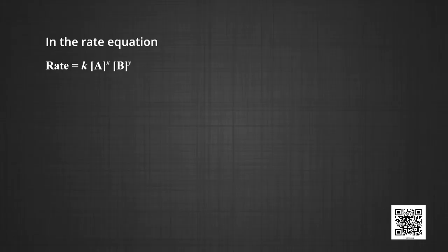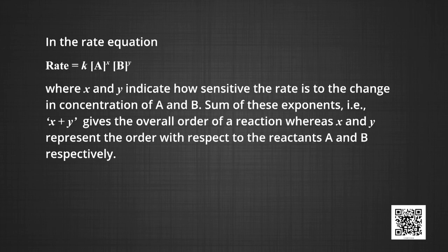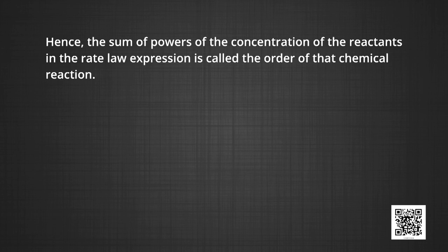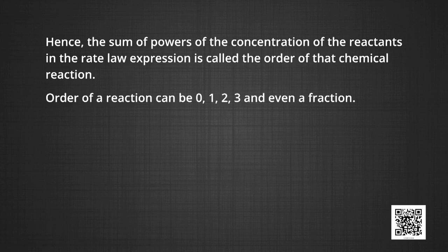Now let us discuss the order of the reaction. In the rate equation: rate = k[A]^x[B]^y, x and y indicate how sensitive the rate is to the change in the concentration of A and B. The sum of these exponents, x + y, gives the overall order of a reaction, whereas x and y represent the order with respect to reactants A and B respectively. Hence, the sum of the powers of the concentration of the reactants in the rate law expression is called the order of the chemical reaction. The order can be 0, 1, 2, 3, or even a fraction.